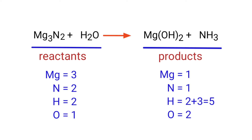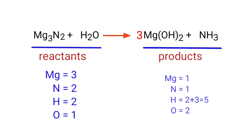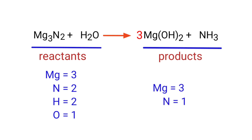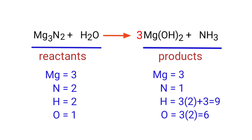In this equation we need to balance the magnesium atoms first. To do this we need to put a coefficient of 3 in front of Mg(OH)₂. The magnesium atoms are now balanced.